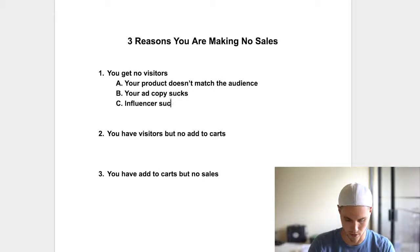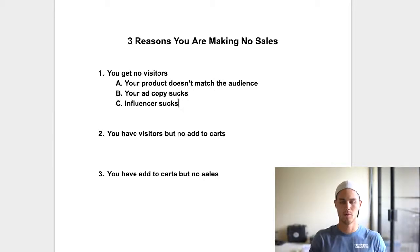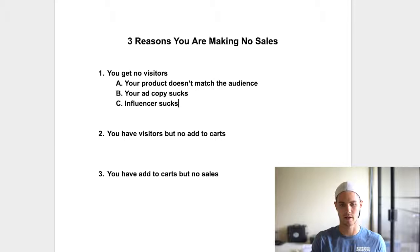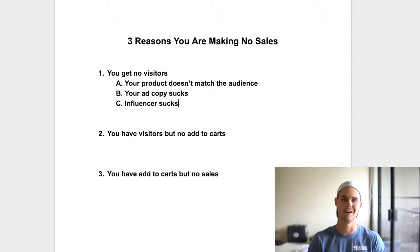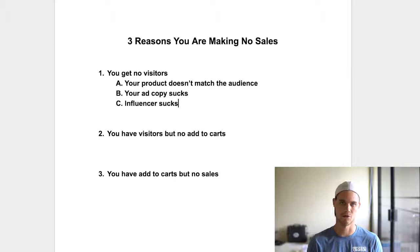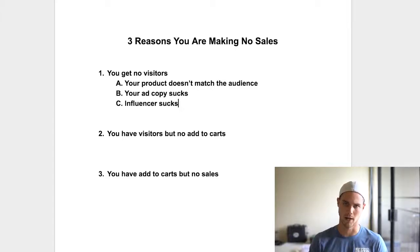Reason number three is your influencer selection. There are two issues: maybe the influencer is great with awesome engagement but your product is just not right for them, so you need to find one more aligned with your product. Or number two, the influencer actually has bot followers or is in engagement groups — their numbers are bigger than they actually are and they're not driving purchases. Make sure you're running traffic to legitimate pages. I have another video on finding influencers that goes more in depth on that.